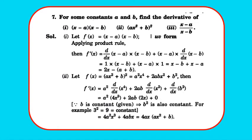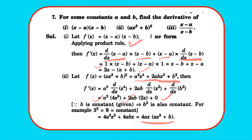Question 7: find the derivative of (x-a)(x-b). Applying the product rule: differentiation of first × second + first × differentiation of second = 1·(x-b) + (x-a)·1 = 2x - a - b. Second part: f(x) = (ax²+b)². Expanding: a²x⁴ + 2abx² + b². Differentiating using x^n rule: f'(x) = 4a²x³ + 4abx, which simplifies to 4ax(x²a + b), or 4ax(ax² + b).